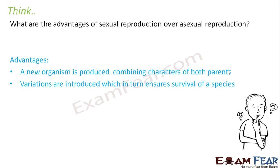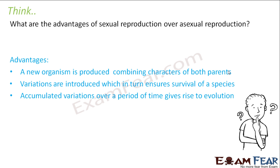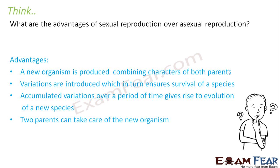Accumulated variations over a period of time give rise to evolution. Small, small variations, when taken together over a long period of time, give rise to new organisms — so it gives rise to evolution. Additionally, two parents can take care of the organism together, whereas in asexual reproduction there is just one parent.